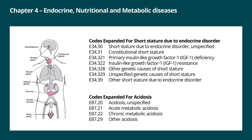Chapter four, endocrine nutritional and metabolic diseases. Code E34.3 for constitutional short stature has been expanded to include further specificity, such as short stature due to endocrine disorder, due to insulin-like growth factor deficiency or resistance, or other and unspecified causes. The other update is for coding acidosis, which previously had only one code E87.2 for unspecified acidosis. Acidosis now has four new codes: unspecified acidosis, acute metabolic acidosis, chronic metabolic acidosis, and other acidosis. All these codes are categorized as CC conditions, impacting DRG selection.